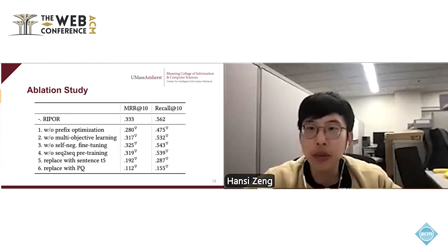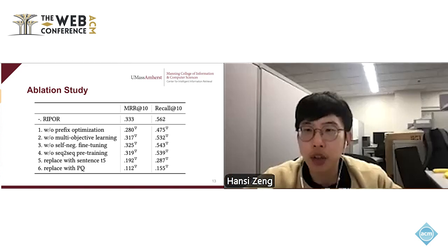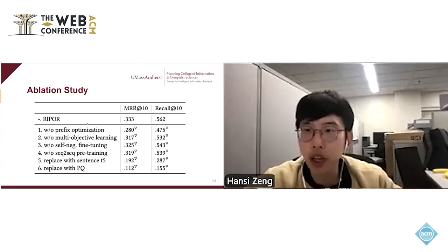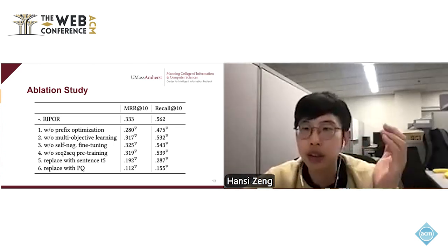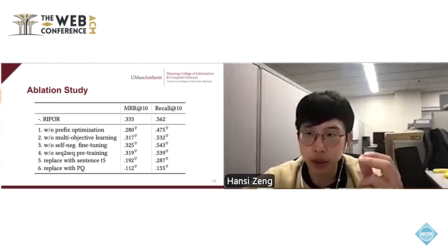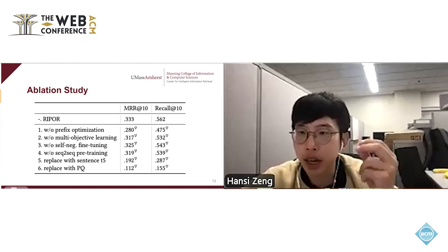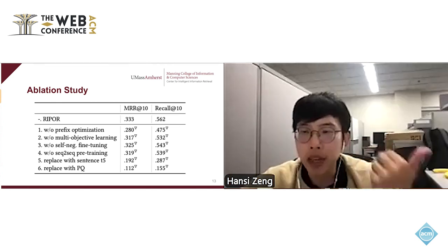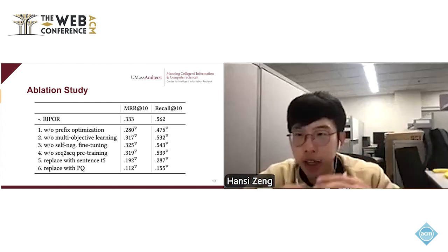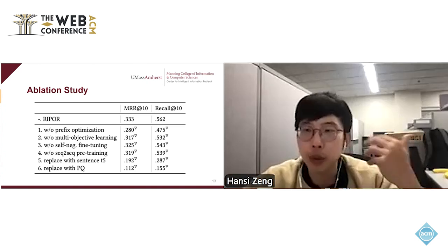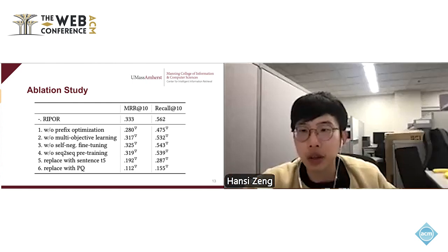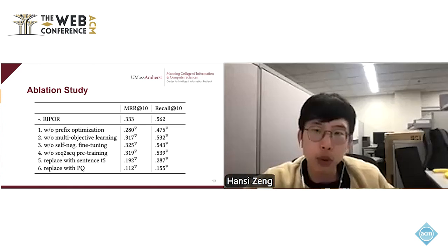From the ablation study, we find that prefix-oriented optimization is important: without it, MRR drops from 0.33 to 0.280. Document ID initialization is also important. If we replace the trained dense encoder with Sentence-T5 — meaning we don't capture reference-based document relationships — performance drops to 0.192. And if we replace residual quantization with product quantization — meaning we don't capture hierarchical document structure — performance drops to 0.112.